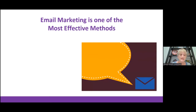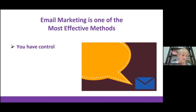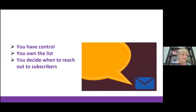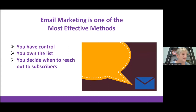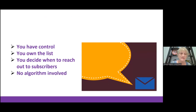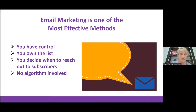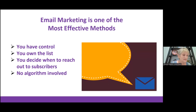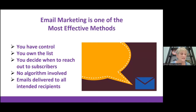Email marketing is 40 times more effective than social media marketing. When you build a subscriber list and market to them through email campaigns, you have control over the process. You own the list so no one can take it away from you. You decide when you want to reach out and contact your subscribers, and there is no algorithm that is going to prevent your messages from reaching the recipients on your list. Those emails that you send out are going to wait patiently in the inboxes until they're opened by the recipients.